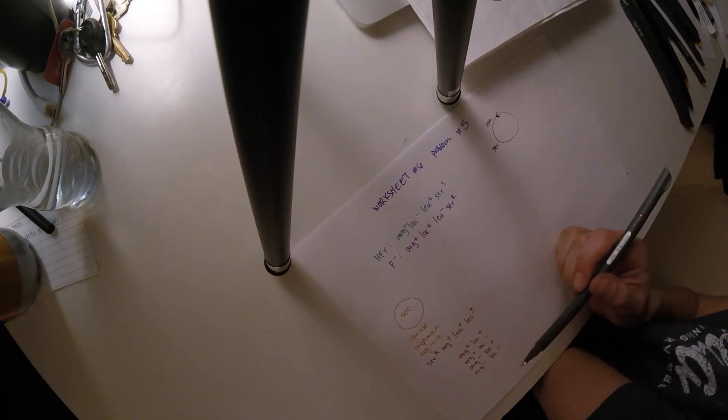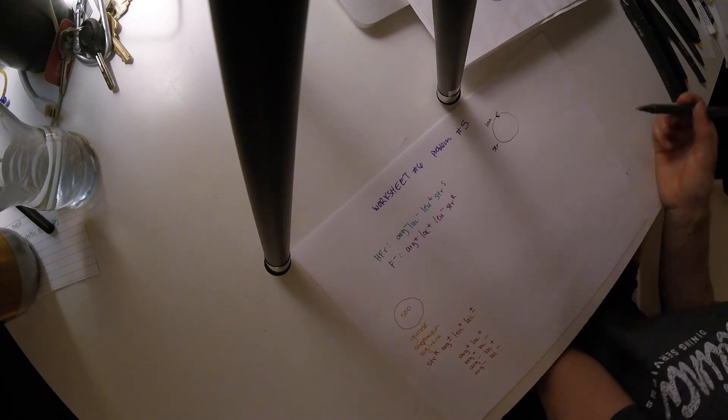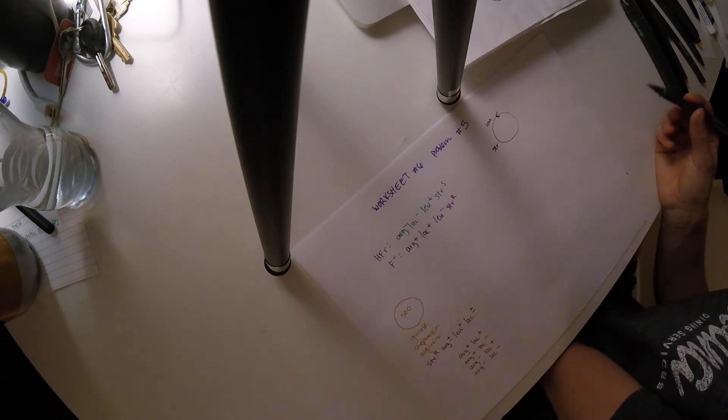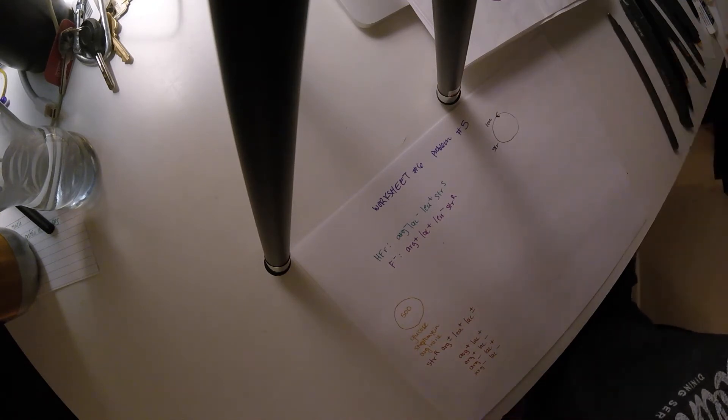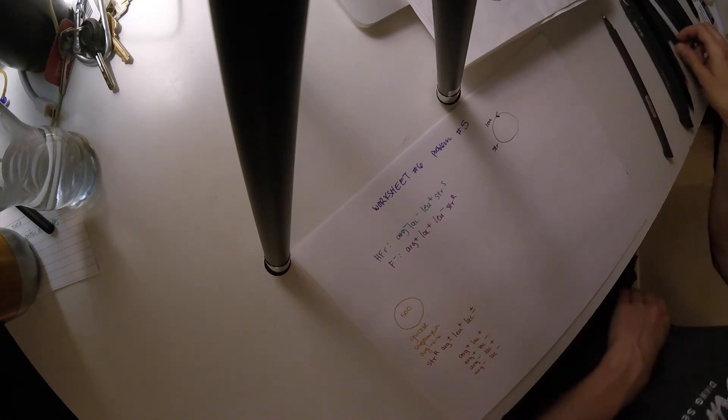So these are all the possible genotypes from the 500 colonies. So that's part of question A. And now we need to figure out how many are in each. So that's when we're going to actually use this number from the other plates that they gave us.